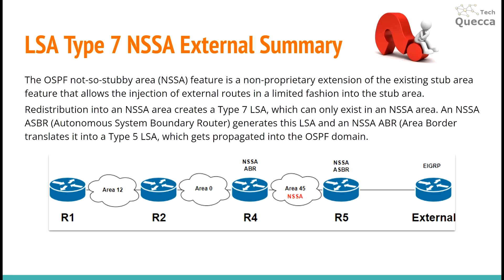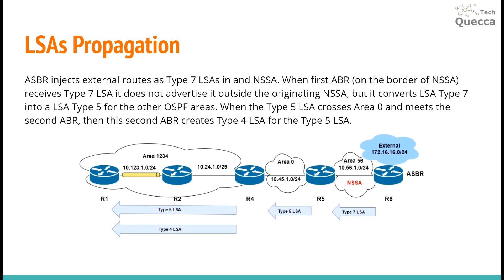Let's review in a little more detail the LSA propagation for this example. The ASBR injects external routes as Type 7 LSAs, so we have a Type 7 LSA in the NSSA area — it exists only within the NSSA area. When the first ABR, which is R5, receives the Type 7 LSA, it does not advertise it outside the originating NSSA area, but instead converts the Type 7 LSA into a Type 5 LSA.